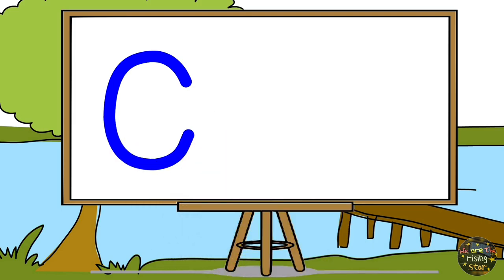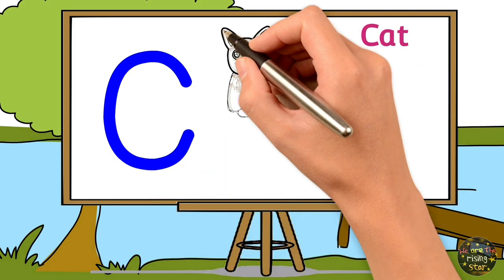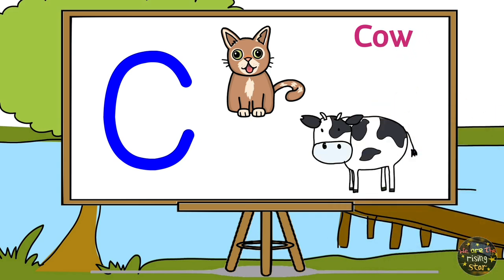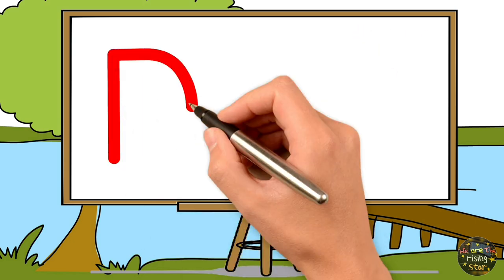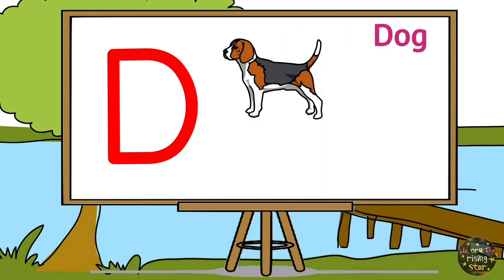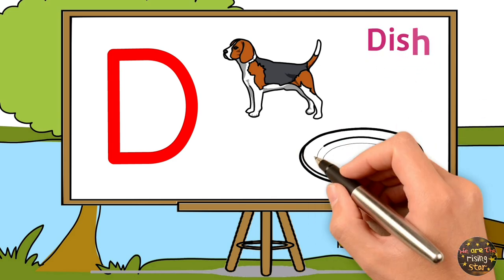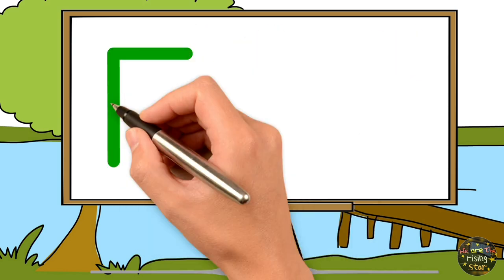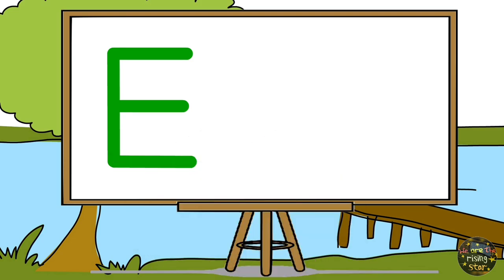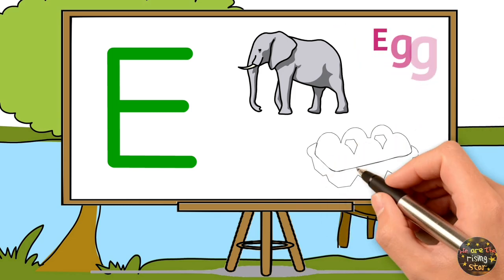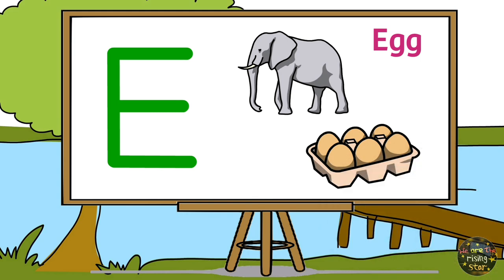C for cat, C cat. C for cow, C cow. D for dog, D dog. D for dish, D dish. E for elephant, E elephant. E for egg, E egg.